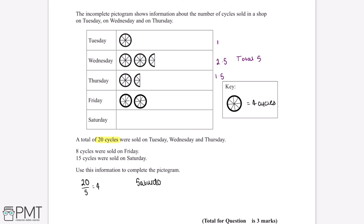15 cycles were sold on Saturday. To work out how many circles we need to draw, we do 15 divided by 4. 15 is the number of cycles and 4 is the number of cycles the key represents. This gives us an answer of 3.75, so we'll need to draw 3.75 circles onto the pictogram in the Saturday row to represent the 15 cycles.